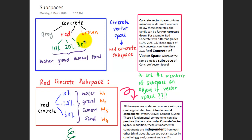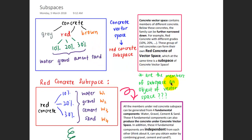Basically, a subspace is a smaller vector space where the members are also members of the larger vector space. So the question here for you to ponder is: are the members of a subspace also objects of the larger vector space?